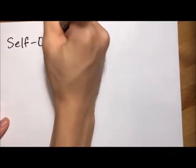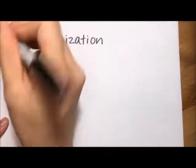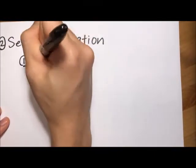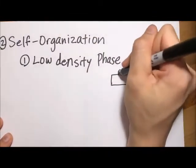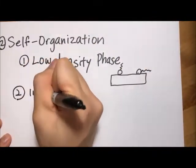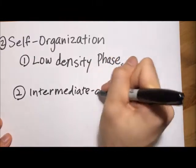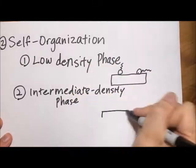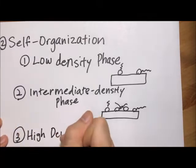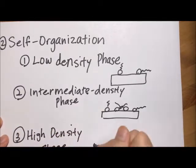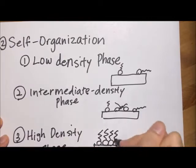The second step of the process for SAM formation is self-organization, which is split into three steps. One, a low-density phase where the molecules are randomly scattered, and as its name suggests, at a low density. Two, an intermediate density phase where some molecules are adsorbed onto the surface of the substrate, but are in random conformations, some lying flat while others standing straight. And lastly, the high density phase where molecules are standing normal to the substrate, and are tightly packed together.